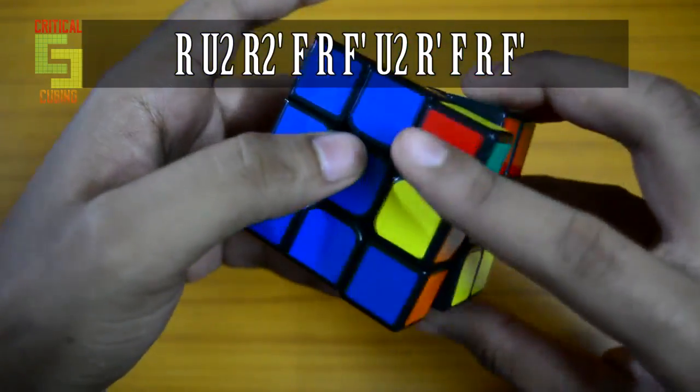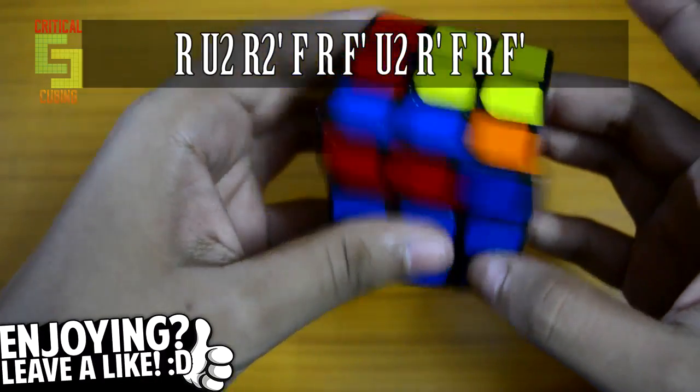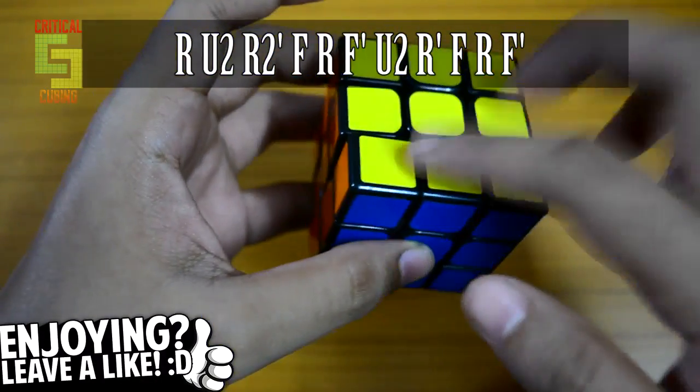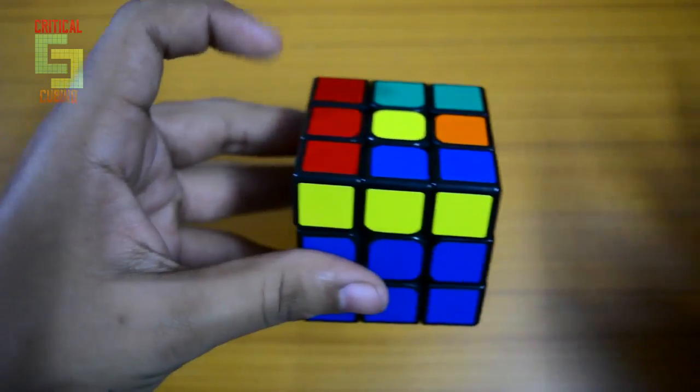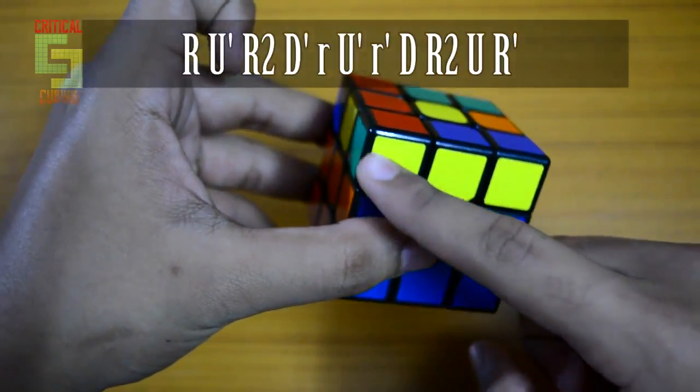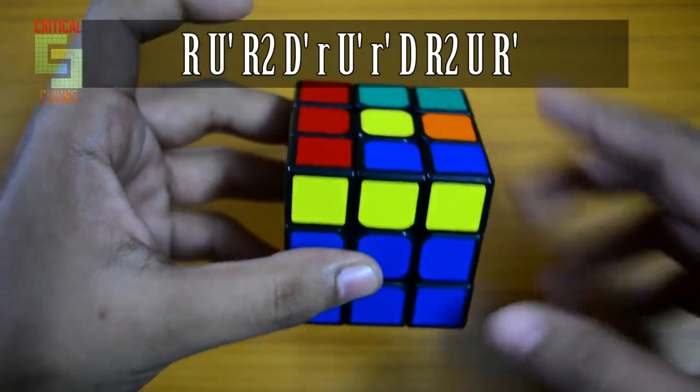Then you do a sledgehammer to orient two of the edges. Then you do a U2 and another sledgehammer to orient two more edges. That will solve this OLL for you. An alternate algorithm which you can use from this angle with the bar in the front is this.